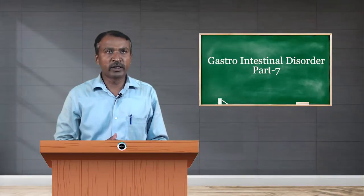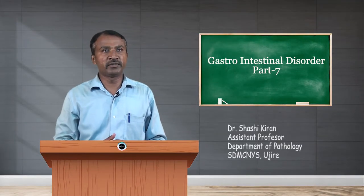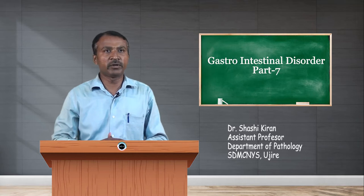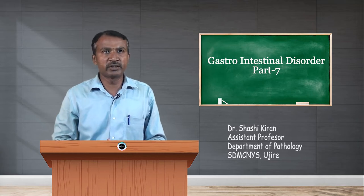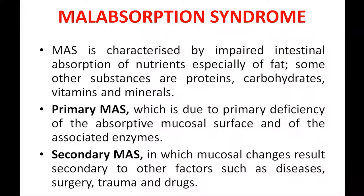Welcome to the session, a continuation of GI disorders. Today we talk about malabsorption syndrome. Malabsorption syndrome is mainly characterized by impaired intestinal absorption of nutrients, especially fat. Other substances affected include proteins, carbohydrates, vitamins, and minerals.